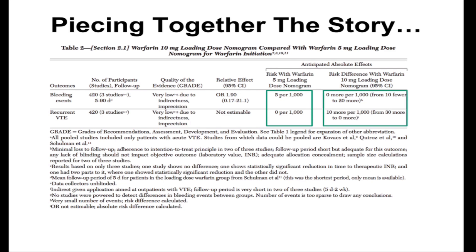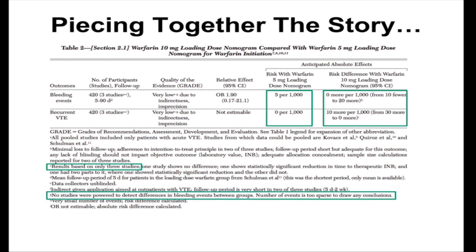These results were unclear with a very small number of events. For recurrent VTE, the results had the same problem — the number of events was too sparse to draw any conclusions.